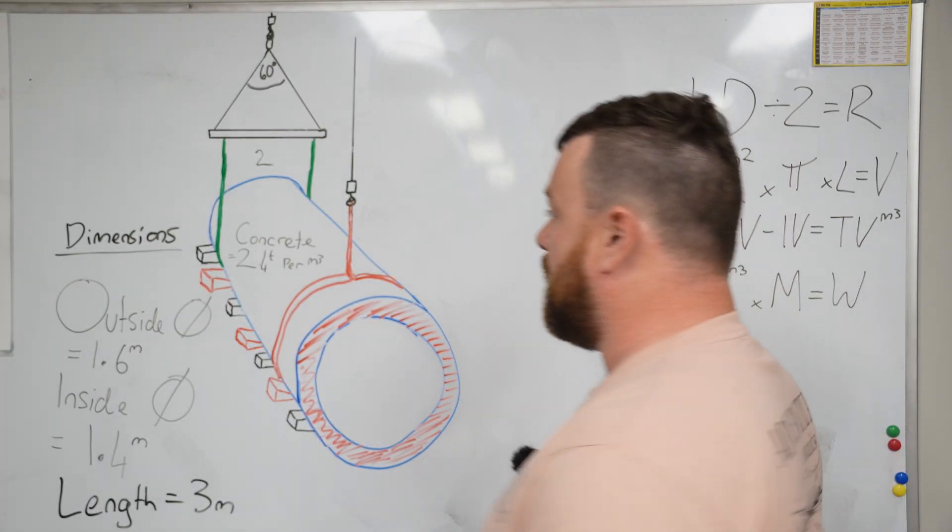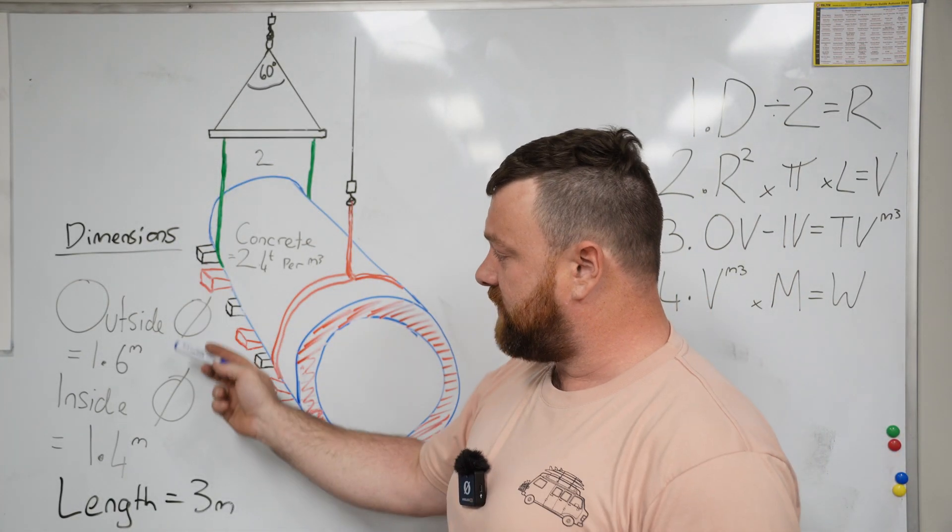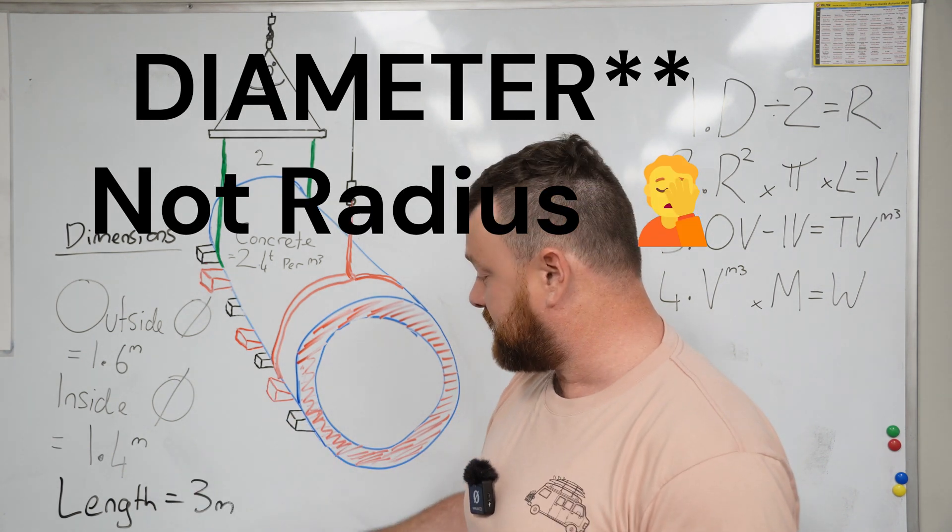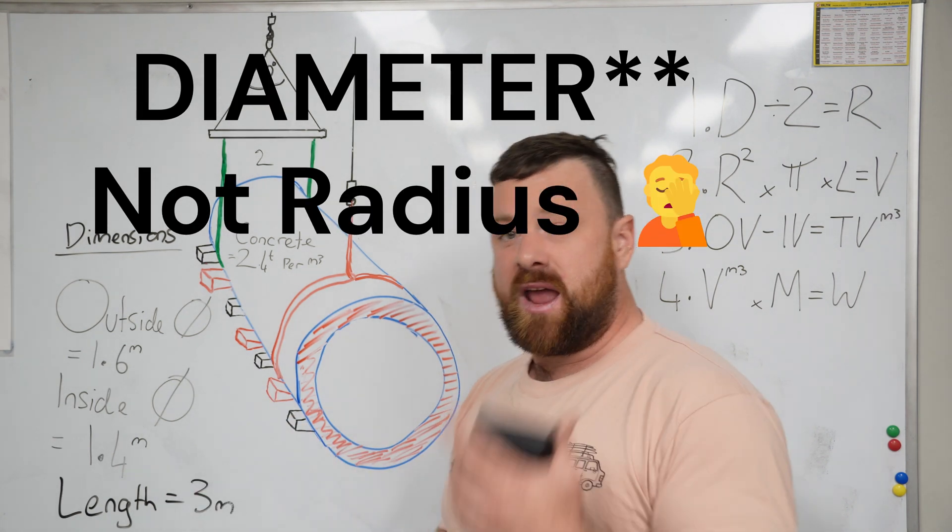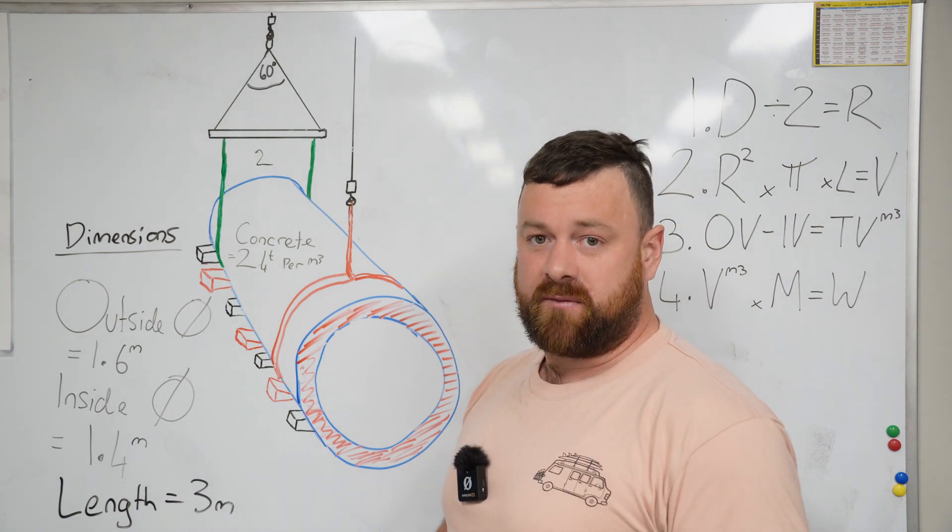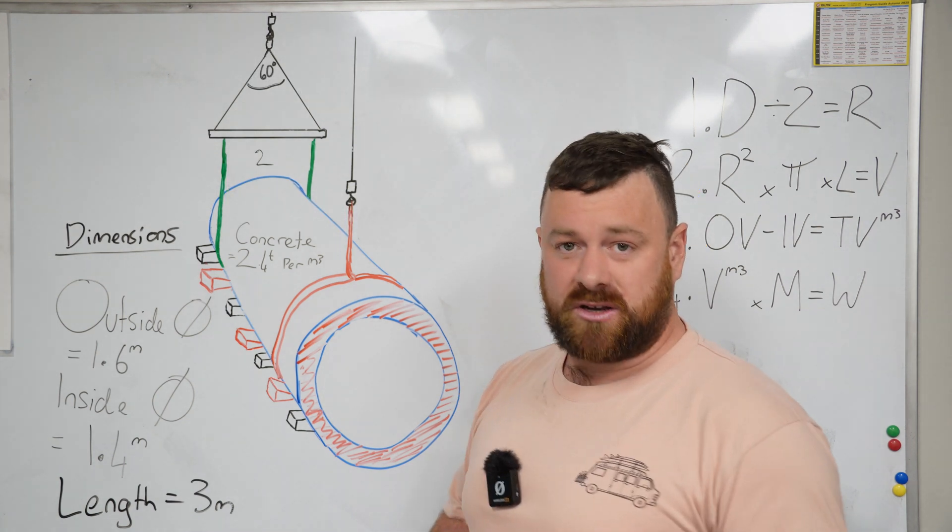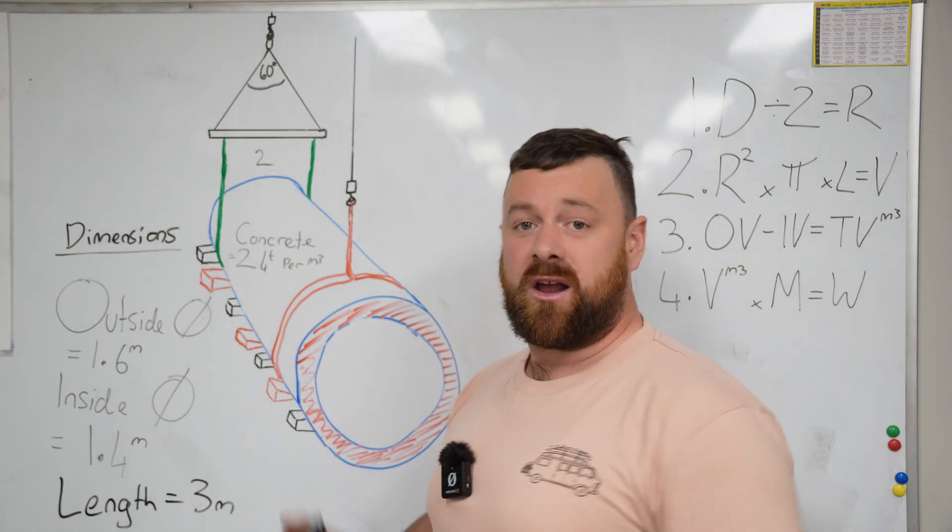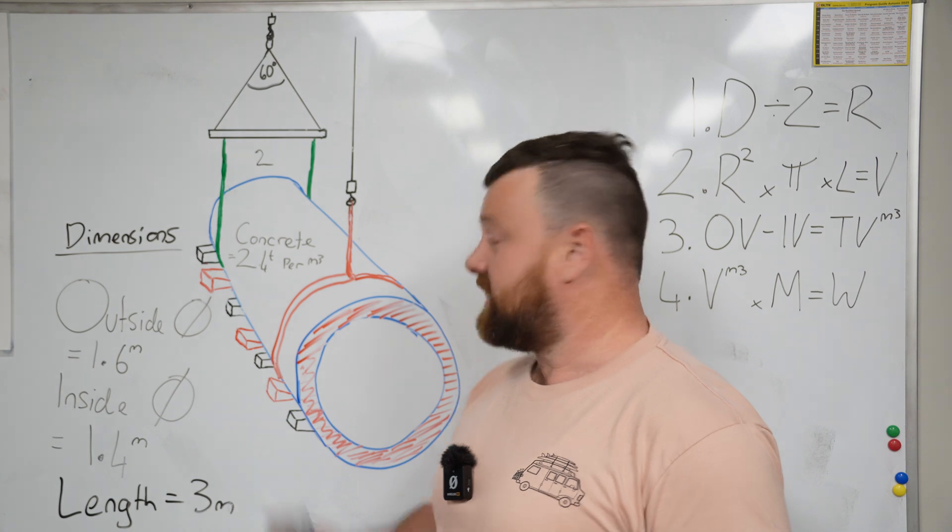Get yourself a calculator. So we have our dimensions here: 1.6 meter outside radius, 1.4 meter inside radius, and our length is 3 meters. Now if a load ever comes to site on the back of a truck and there's no consignment note or delivery docket or waybridge notes, you've just got this load and you've got to lift it, you're going to need to find out how much it weighs.